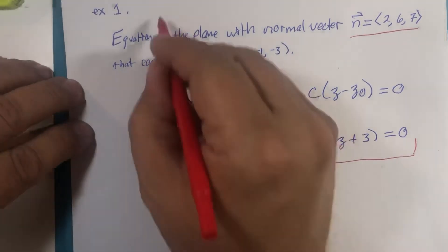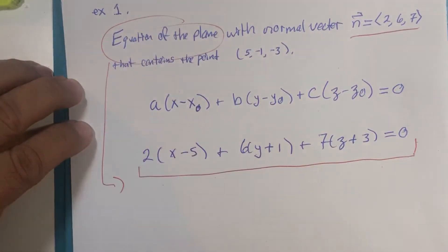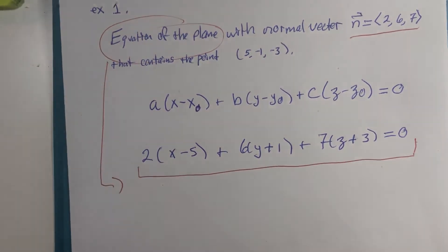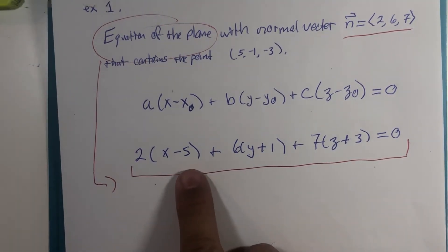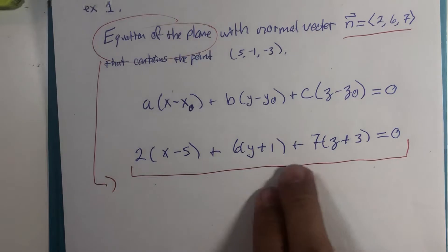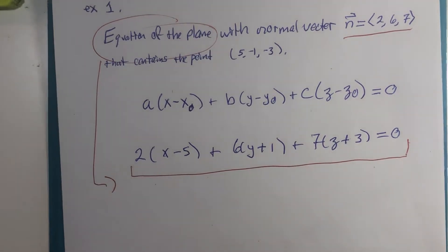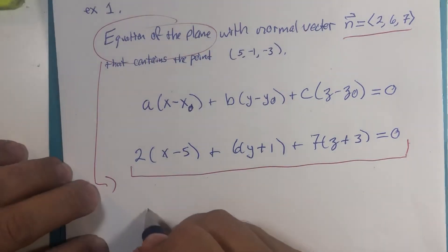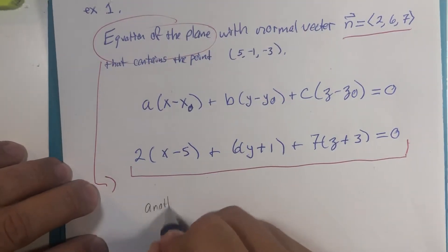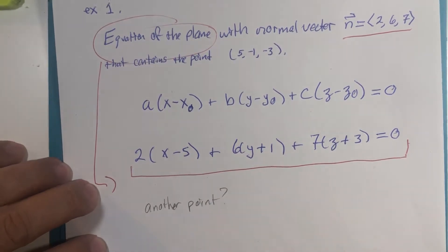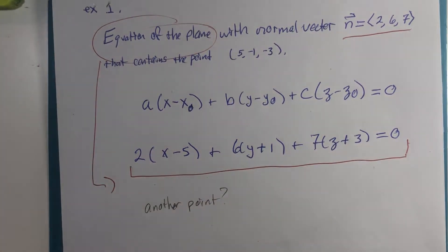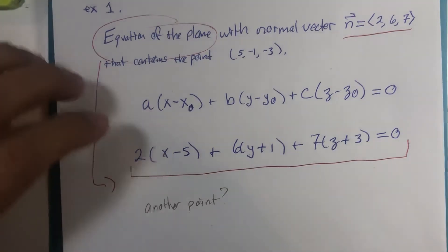This algebra is one version of the equation of the plane we're looking for. You could rewrite it — the textbook will often distribute and keep the X, Y, and Z terms, putting the constant terms on the other side.